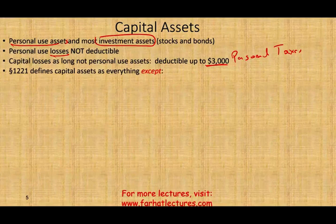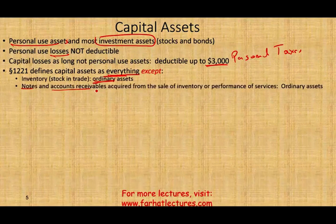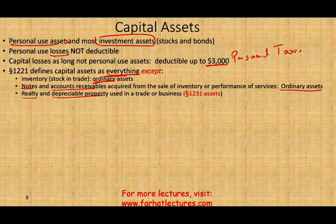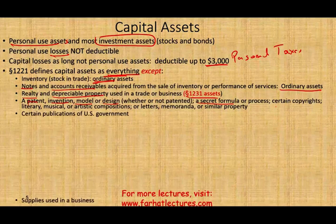Other items excluded from capital asset treatment include: a patent, invention, model, or design whether patented or not; a secret formula or process; certain copyrights; literary, musical, or artistic compositions; letters, memoranda, or similar properties; and certain U.S. government publications used in a business. Capital assets include assets held for investment such as stocks, bonds, and land held for investment purposes, as well as personal use assets like a residence and a car.